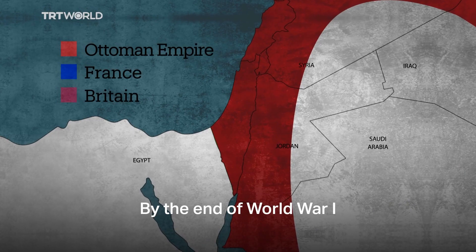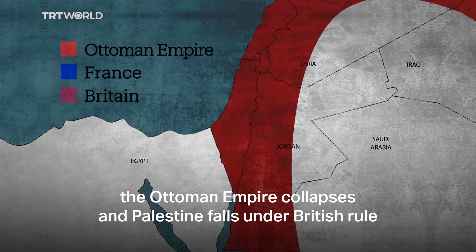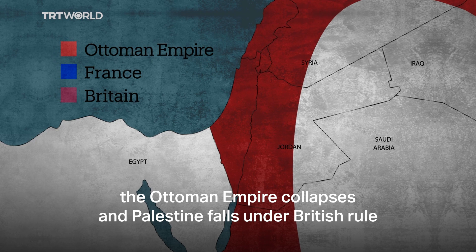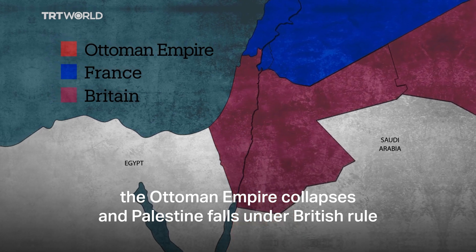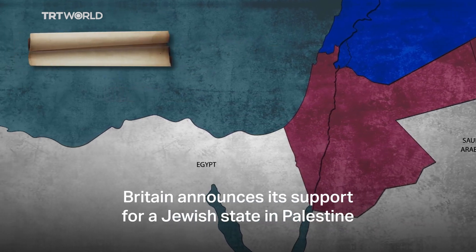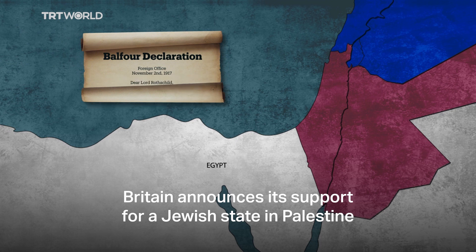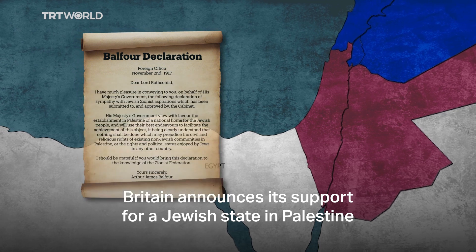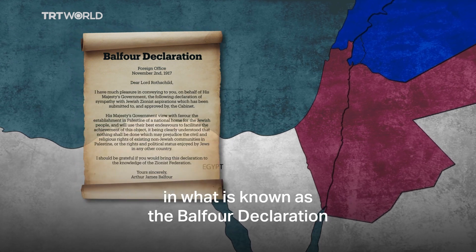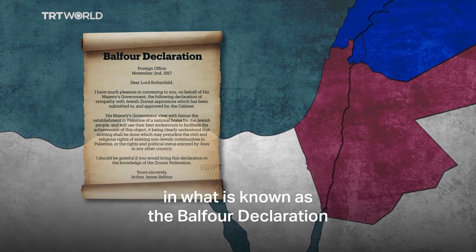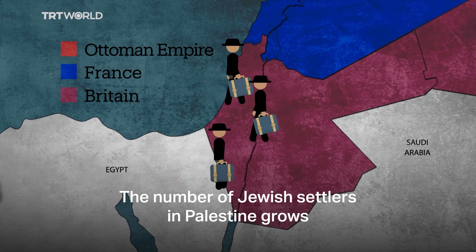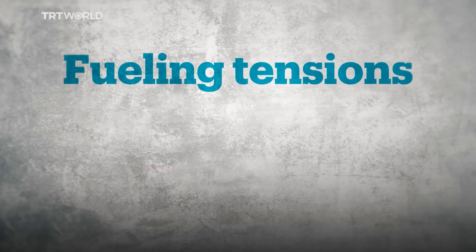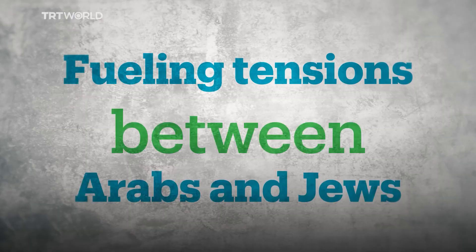By the end of World War I, the Ottoman Empire collapses and Palestine falls under British rule. In 1917, Britain announces its support for a Jewish state in Palestine, in what is known as the Balfour Declaration. The number of Jewish settlers in Palestine grows, fueling tensions between Arabs and Jews in the region.